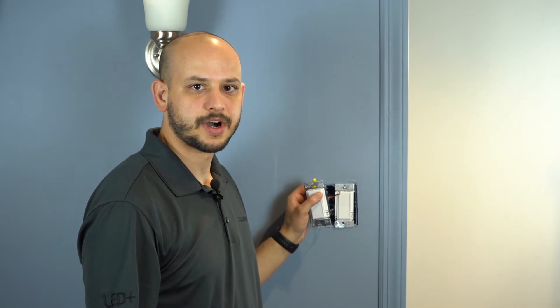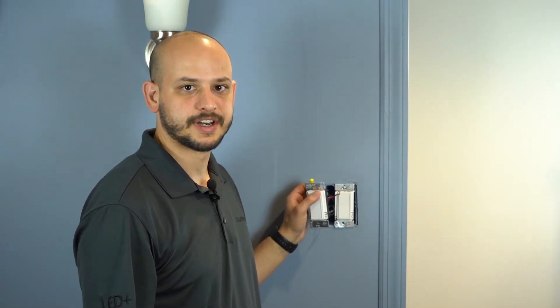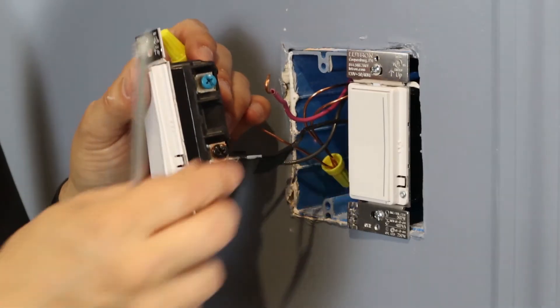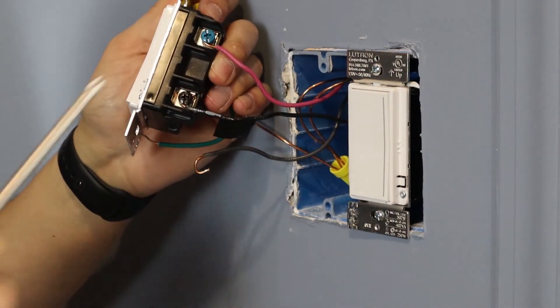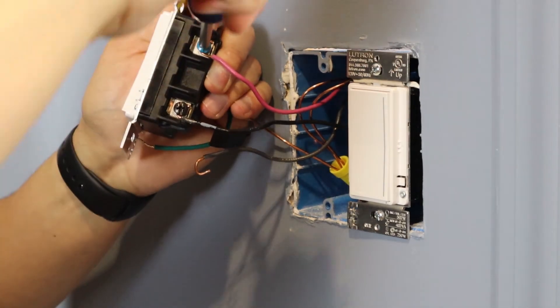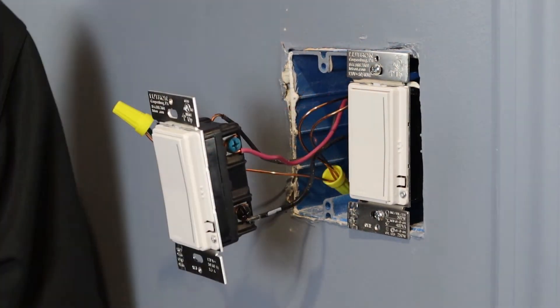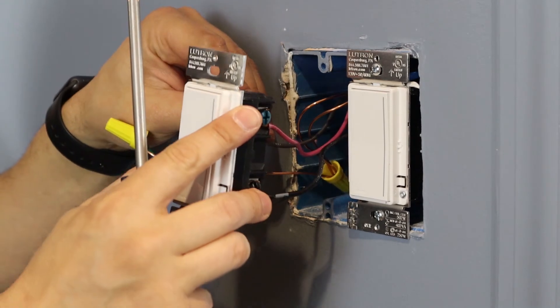Remember that we used the red wire in the previous location to connect to the blue screw. So in this location, we also want to use that same red wire to attach to the blue screw on your companion. Connect the remaining traveler to the brass screw on your dimmer.